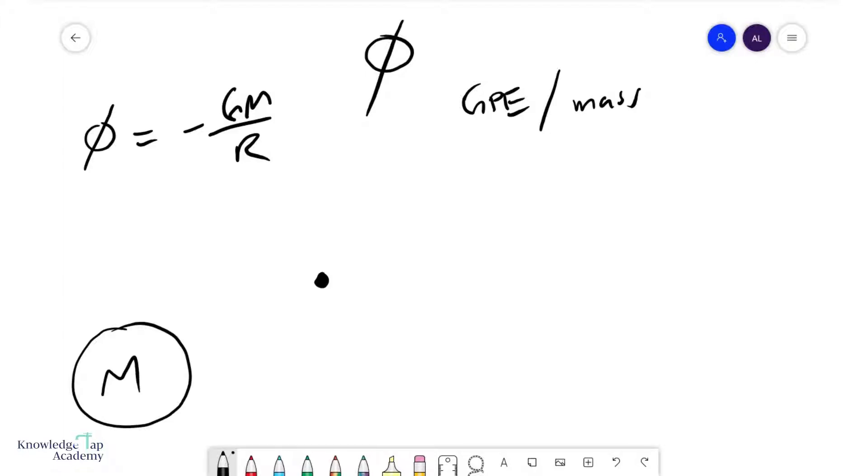it could be a planet, a star, or whatever, and the distance from this point to the center of this mass is r, and the potential at this point will be negative GM over r, where G is the gravitational constant.